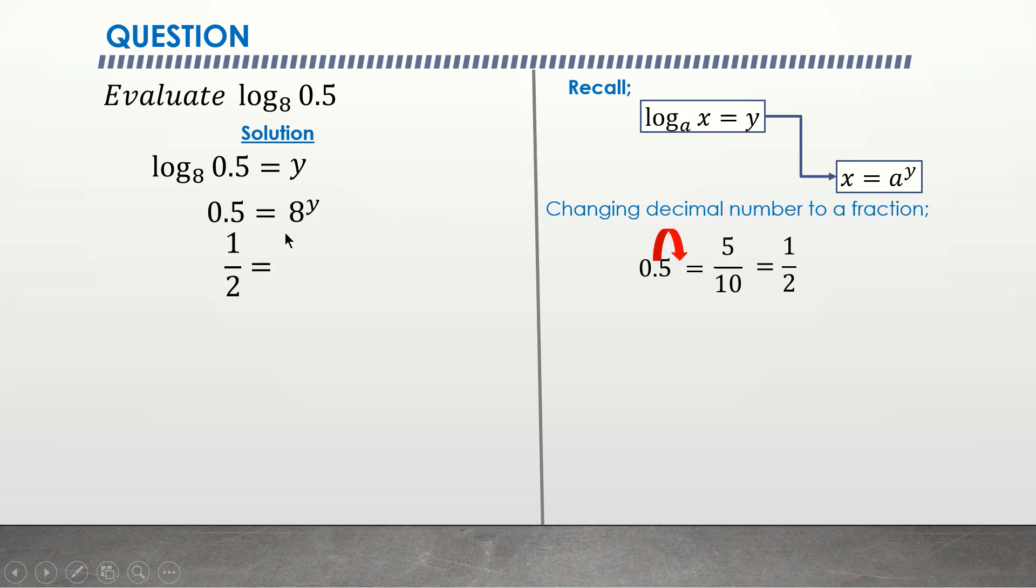If you recall in indices, 1 over a to the power 1 becomes 2 raised to the negative 1 equal to 8 to the power y.